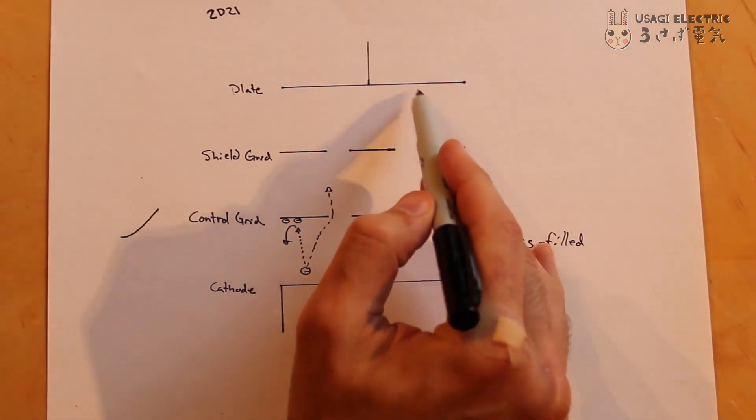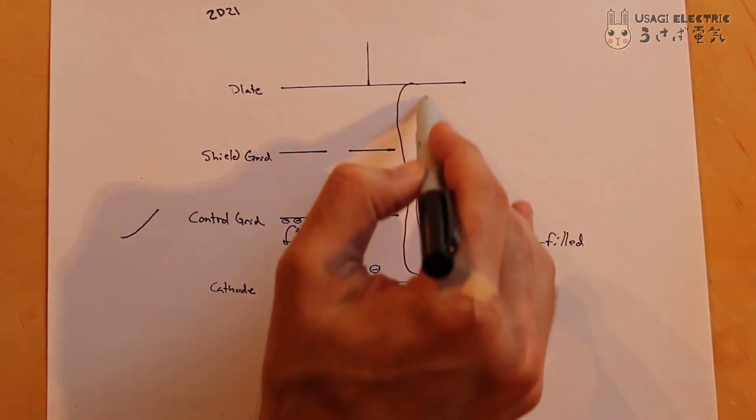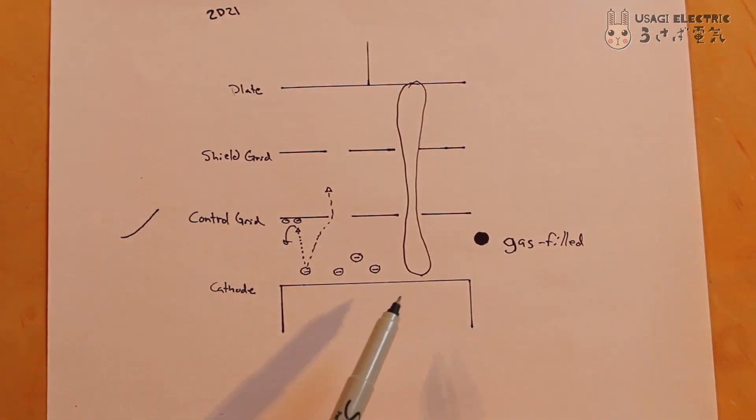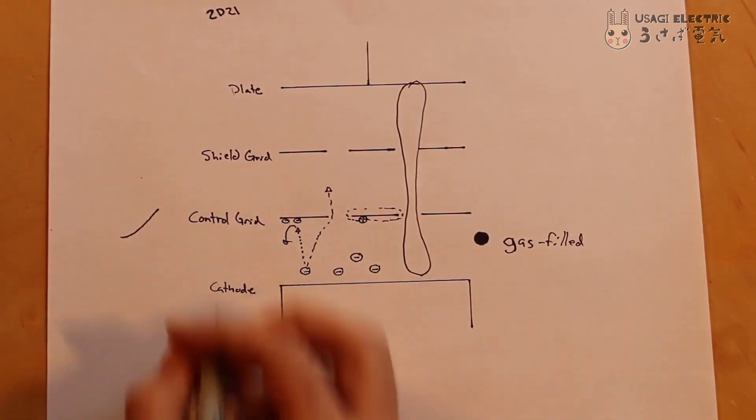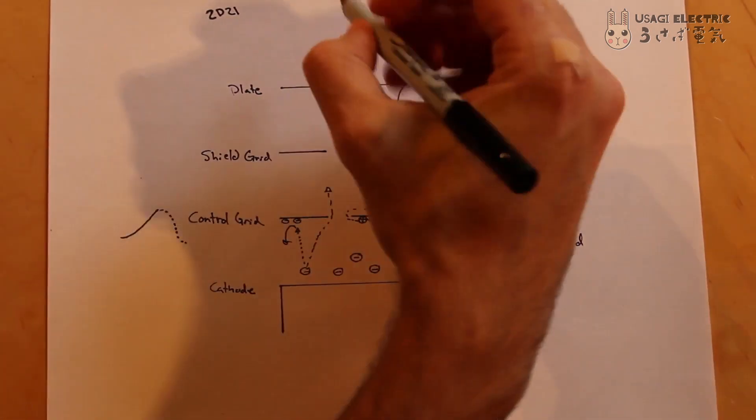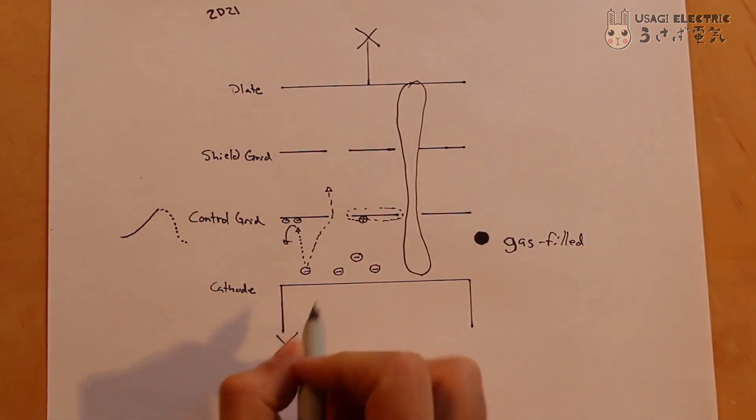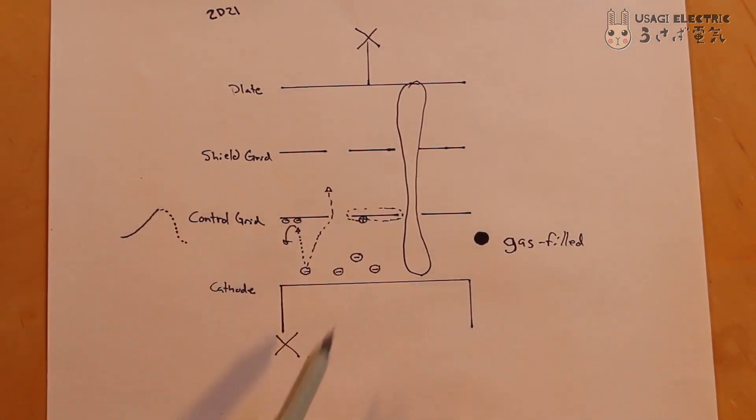The gas then ignites, creating an arc of plasma that connects the plate to the cathode, enabling a much higher amount of current to flow. Once ignited, the grid is encased in positive ions, essentially disabling it. This means that the only way to turn the thyrotron off again is to cut the current at either the plate or the cathode.